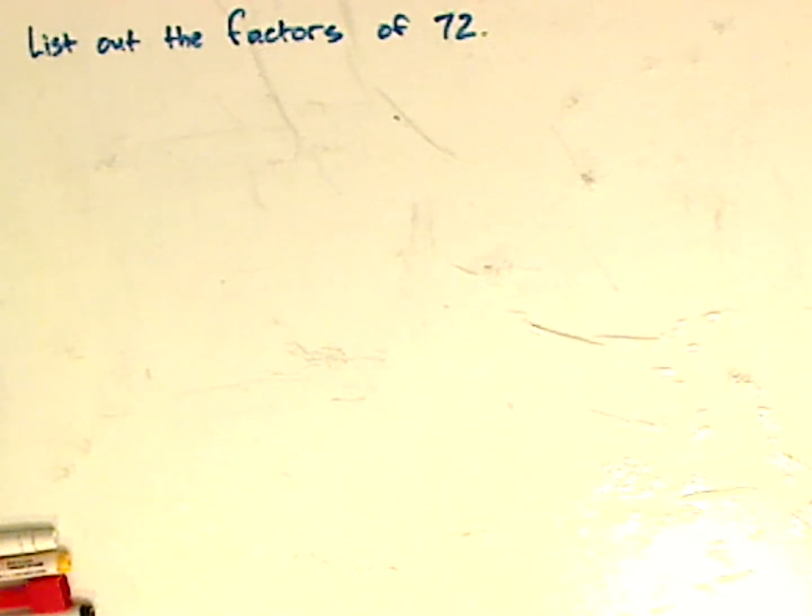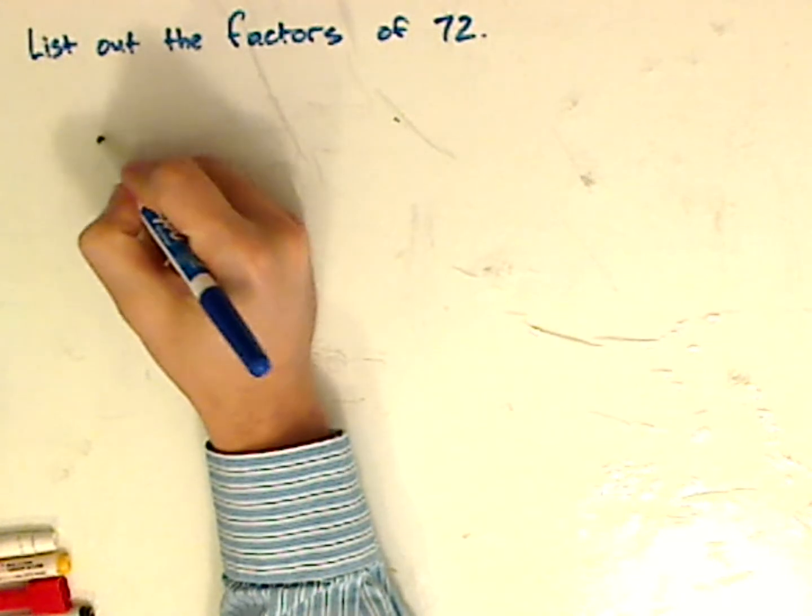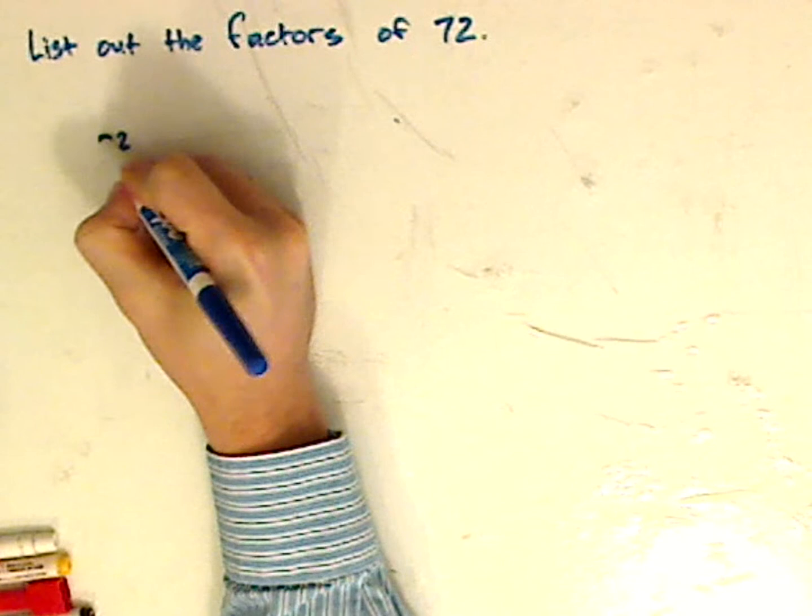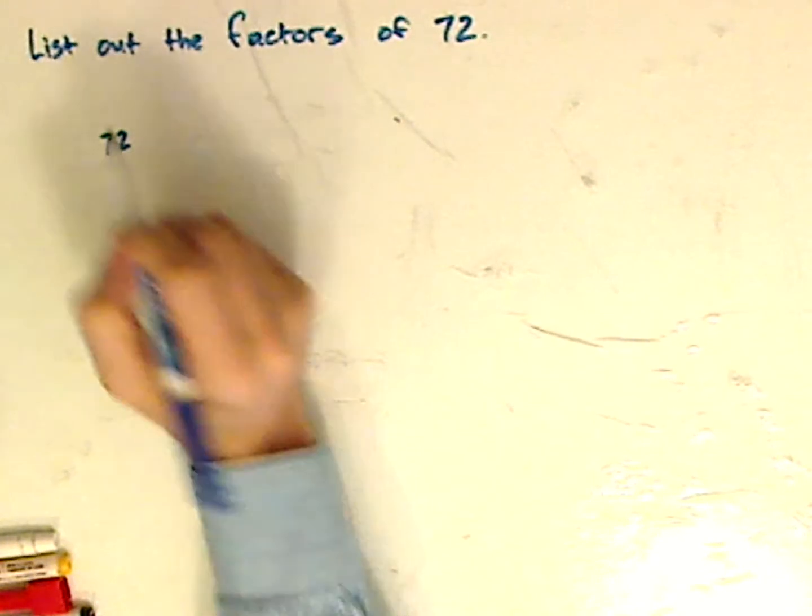So if you would, pause the video and see if you can try this one on your own. Alright, the directions say, list out the factors of 72. So I suggest using a factor tree, you don't necessarily have to, but it helps a lot.